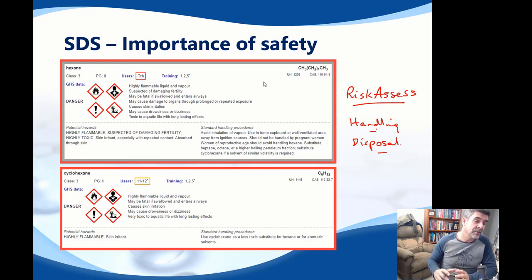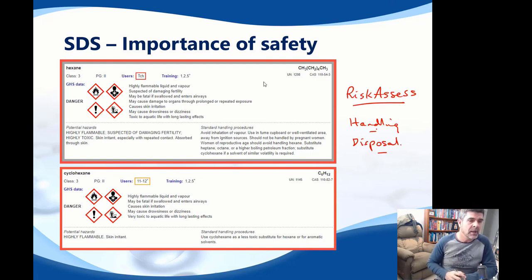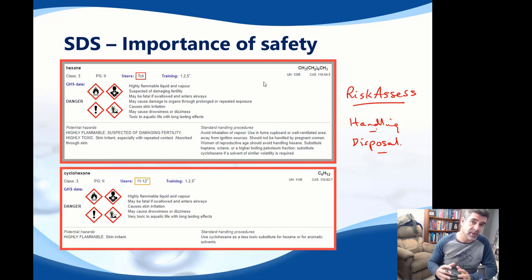There are a range of different organic compounds that we can use to demonstrate a range of different properties, both physical and chemical, but we need to make choices about what we're using in order to ensure that we are maintaining our highest possible levels of safety.